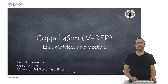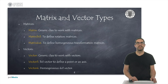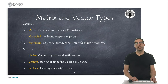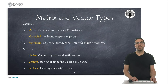In this video I'm going to explain how to work with matrices and vectors in Lua within CoppeliaSim. Lua has several classes to represent matrices and vectors. It has two generic classes, matrix and vector, that will allow us to represent any matrix or vector respectively. In addition, it includes specific classes to represent a rotation matrix, a homogeneous transformation matrix, or the position of a 3D point. The objective of this presentation is to focus on the two generic classes, while specific classes for working with 3D geometry will be seen in another video.